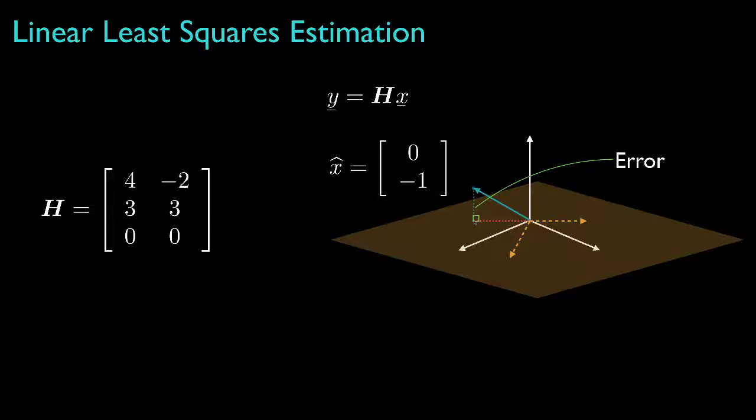That is, our estimate of where we think the observation would have been and the actual observation has an error associated with it, and that will always be orthogonal to the range of the observation matrix. Now this general idea is often referred to as the orthogonality principle for linear least squares estimation.